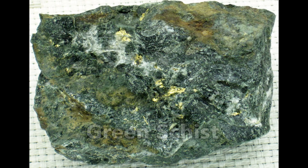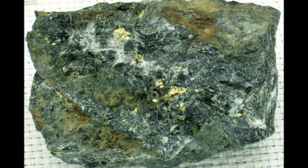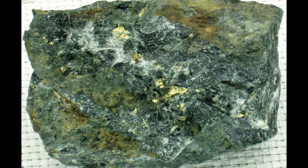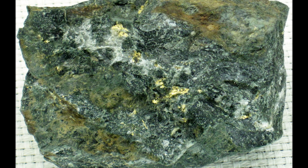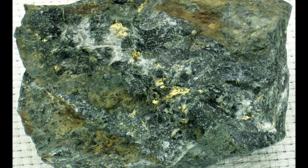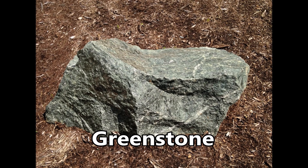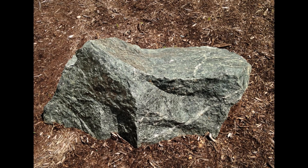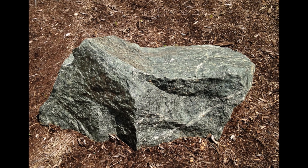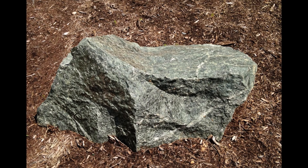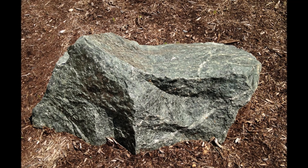Greenschist forms by regional metamorphism under conditions of high pressure and fairly low temperature. It isn't always green or even a schist. Greenschist is the name of a metamorphic facies — a set of typical minerals that form under specific conditions. Greenstone is a tough, dark, altered basaltic rock that once was solid deep-sea lava. It belongs to the greenschist regional metamorphic facies. In greenstone, the olivine and peridotite that made up the fresh basalt have been metamorphosed by high pressure and warm fluids into green minerals.